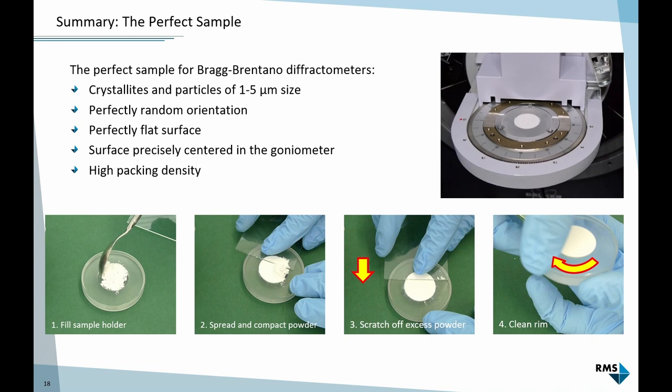To summarize, what should we do for the perfect sample during preparation? We have to make sure crystallites and particles are in the range of 1 to 5 micrometers. They are randomly oriented, that the sample surface is perfectly flat. Once on the instrument, it's perfectly centered on the axis of the goniometer. We also want high packing density - don't just sprinkle powder, but compact it into the sample holder because this reduces penetration depth and helps getting high resolution signal.